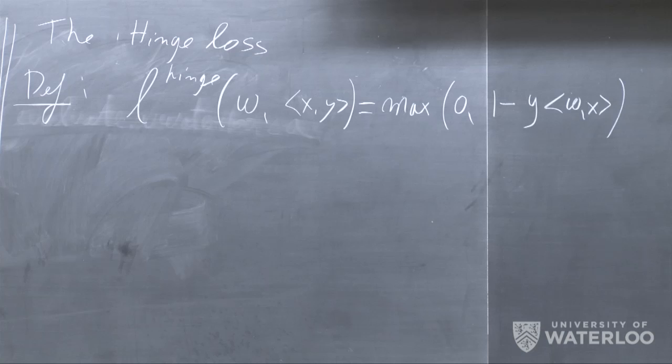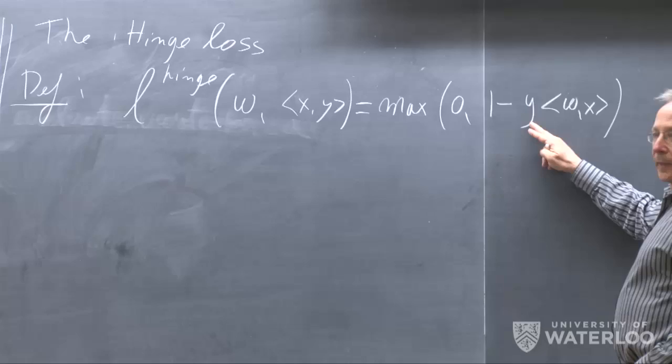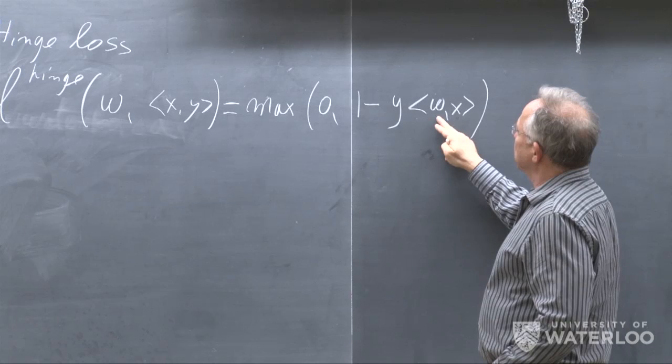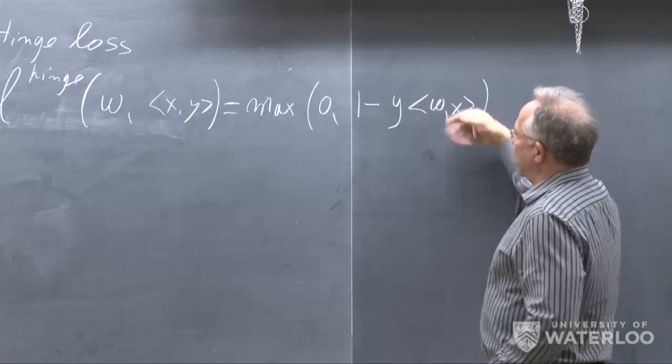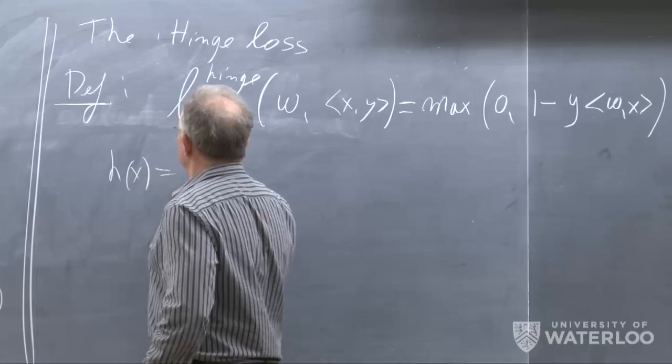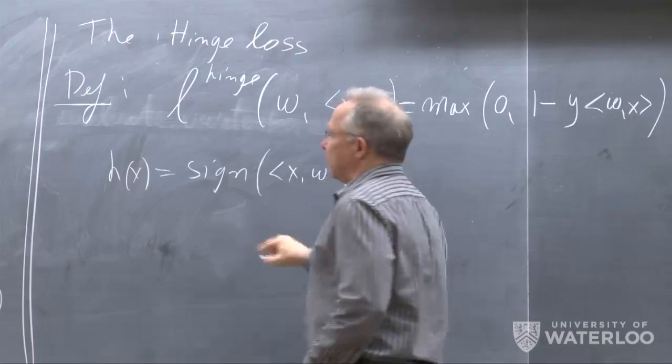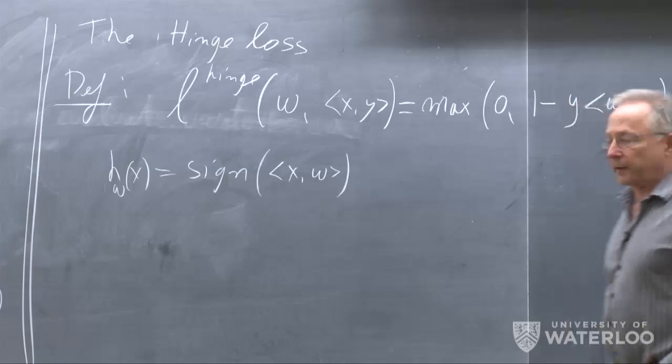Note that W times X, the inner product X·W, is our predictor. We try to predict with H of X equals the sign of X·W. That's the H_W of X — the predictor parameterized by the vector W.